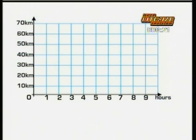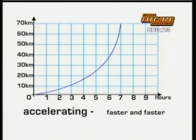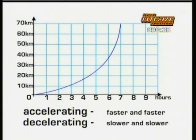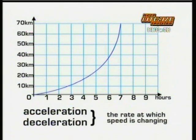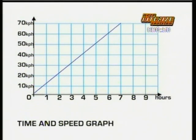If something doesn't travel at a constant speed but gets faster and faster, then its time-distance graph looks something like this. Accelerating is the word for getting faster and faster; decelerating is the word for getting slower and slower. Acceleration and deceleration are the rates at which the speed is changing. There's another way of showing acceleration on a graph — that's a time and speed graph.